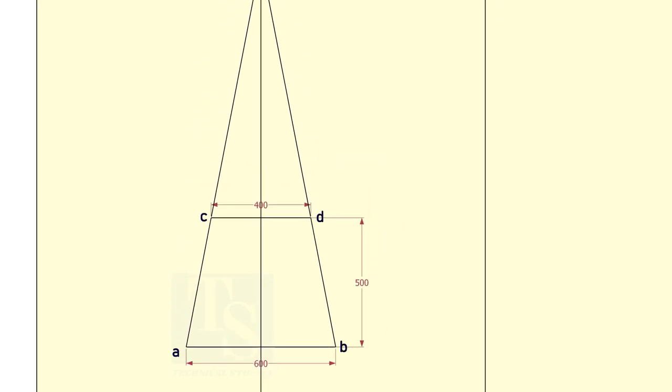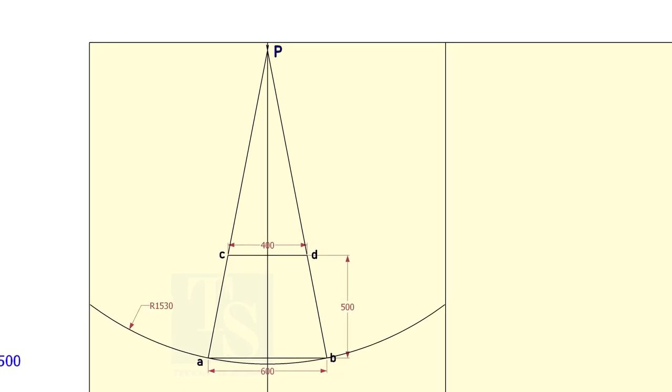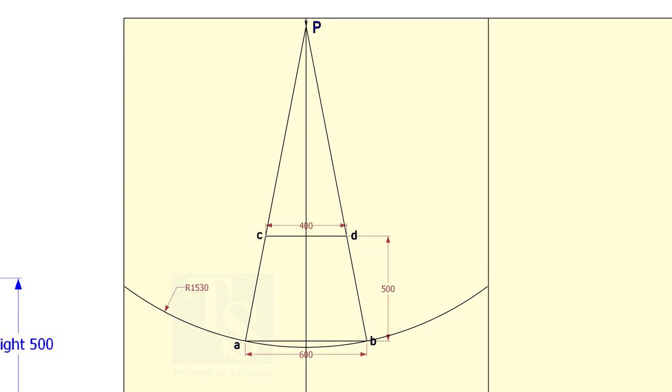Extend the lines A, C and B, D until the lines intersect each other. Draw an arc centering P and radius PA. Draw the arc PC.